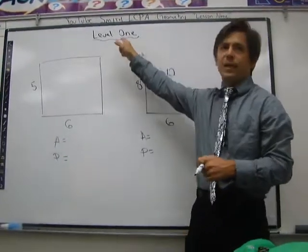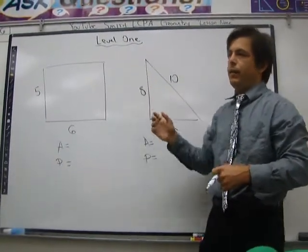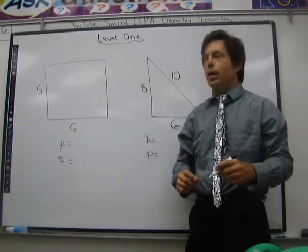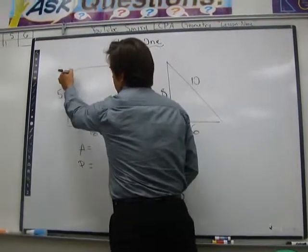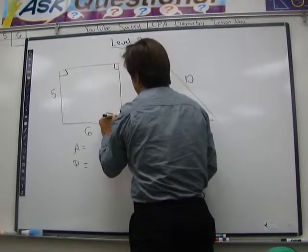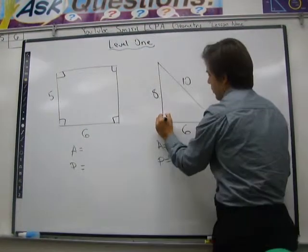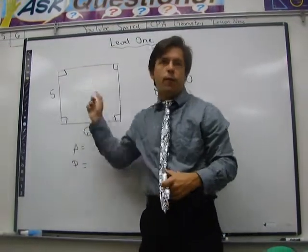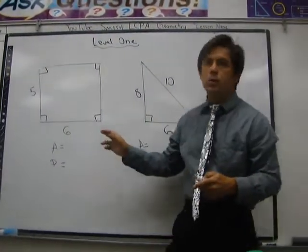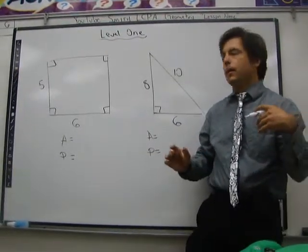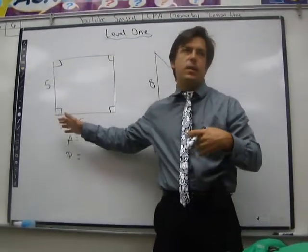Okay, we are going to begin level one of area and perimeter. What we have here is a rectangle. We know it's a rectangle because it has four 90 degree angles. Four 90 degree angles mean that you can divide it up.